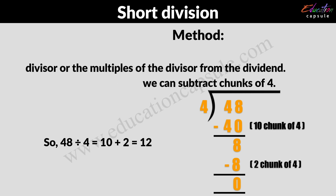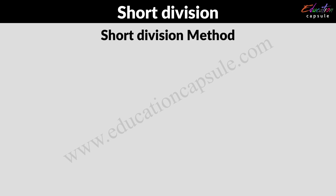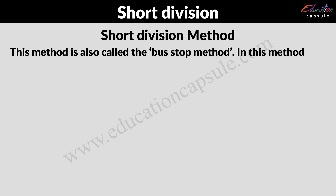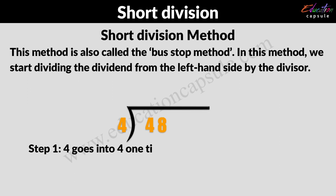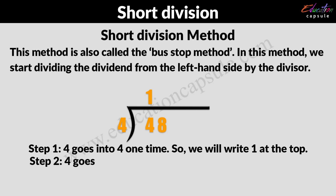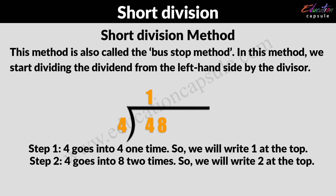Next is the short division method. This method is also called the bus stop method. In this method, we start dividing the dividend from the left-hand side by the divisor. For example, step 1: 4 goes into 4 one time, so we'll write 1 at the top. Next, 4 goes into 8 two times, so we'll write 2 at the top. So we can say that 48 divided by 4 gives you 12.